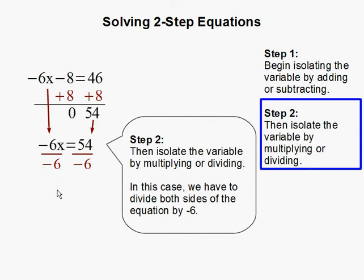This cancels out, and if we divide negative 6 on one side of the equal sign, we have to do the same on the other side. So 54 divided by negative 6. And negative 6 divided by negative 6, that gets us 1. 54 divided by negative 6, that gets us negative 9.